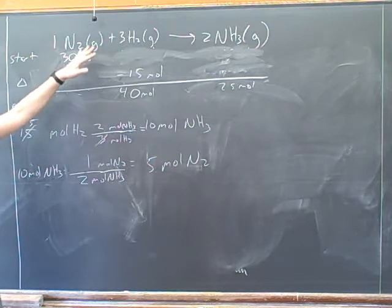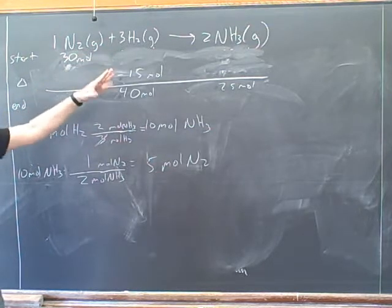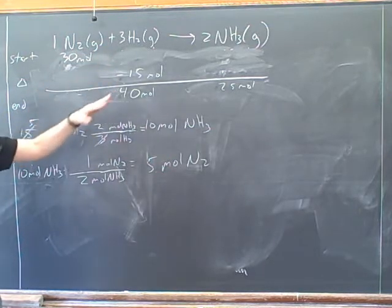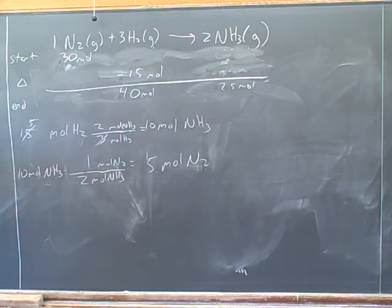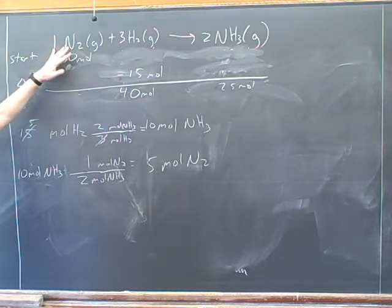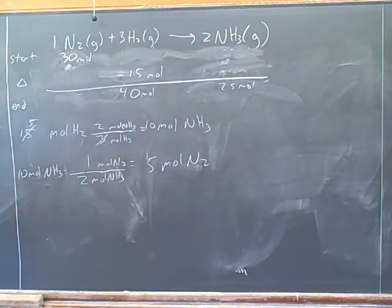You'd have to figure out which of those numbers are starting numbers, which are change numbers, and which are ending numbers — that's something you have to do on your own. In fact, the first thing you would have to do is write down the chemical equation and balance it. So we already did a bunch of work here that you'd actually have to do if this was a real problem.